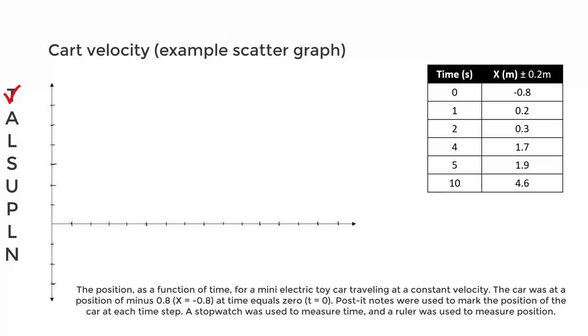Next, we need to identify the independent and dependent variables, which are in the column headers of the table. The independent variable is time, which can be represented by the symbol T. And the dependent variable is the position of the car, which can be represented as X. We can then include these symbols at the end of our axes.